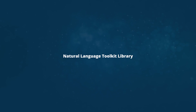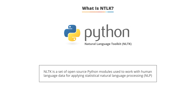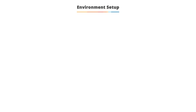Let's look at the Natural Language Toolkit library in detail. NLTK is a set of open source Python models used to apply statistical natural language processing on human language data. Let's see how you can set up the NLTK environment.